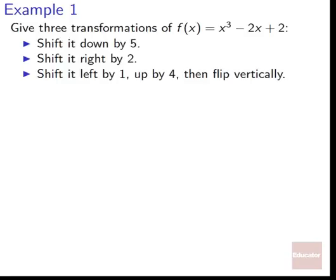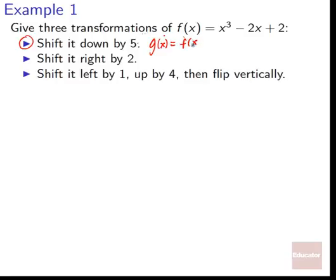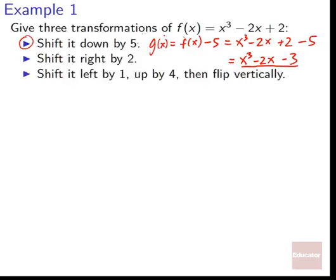Let's work some examples with f(x) = x³ − 2x + 2. First: shift down by 5. Vertical shift with k = −5 gives f(x) − 5. So g(x) = x³ − 2x + 2 − 5 = x³ − 2x − 3.